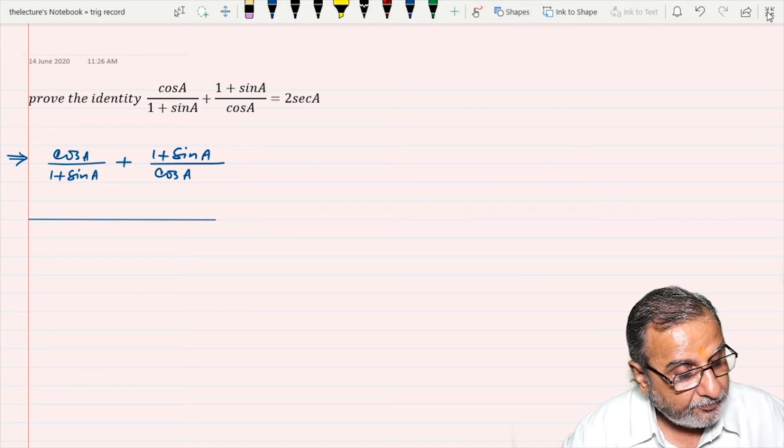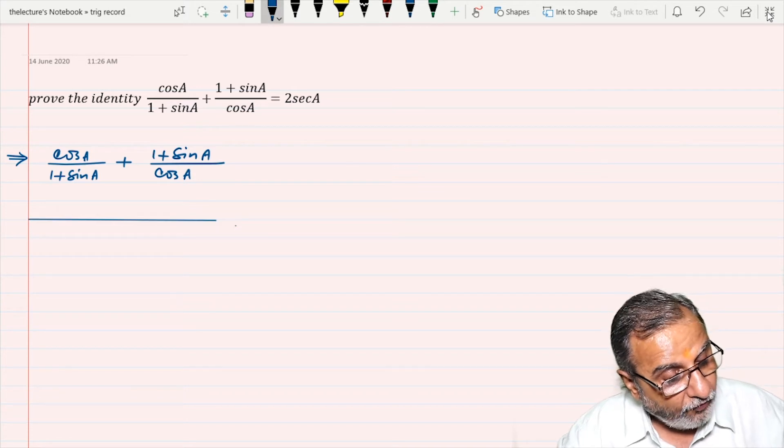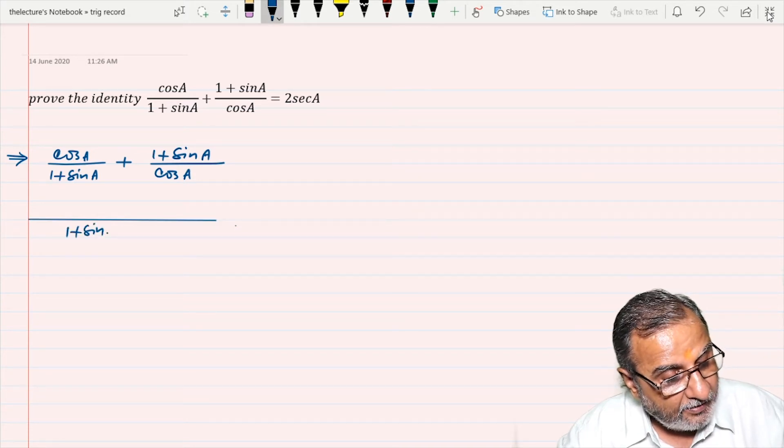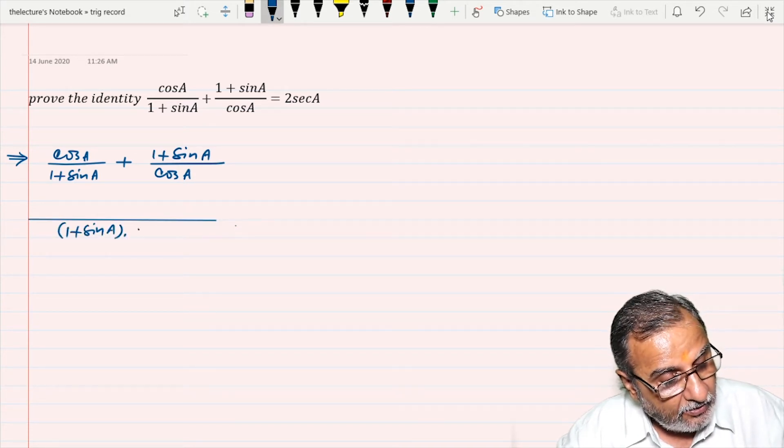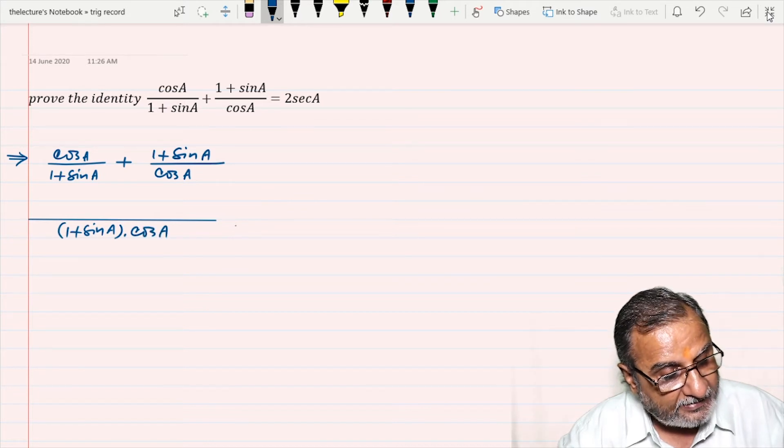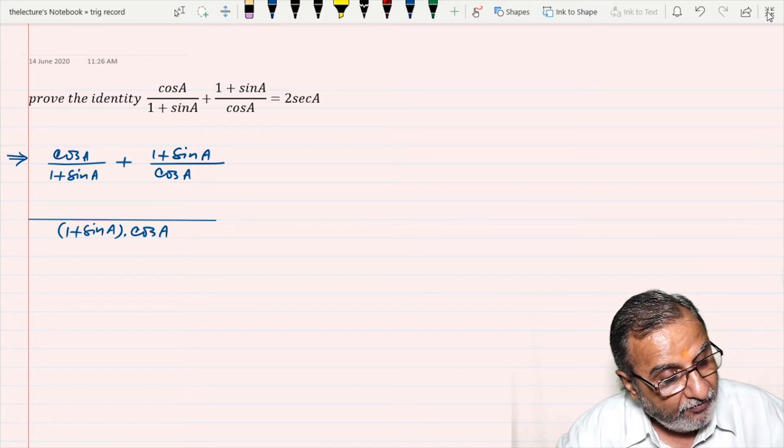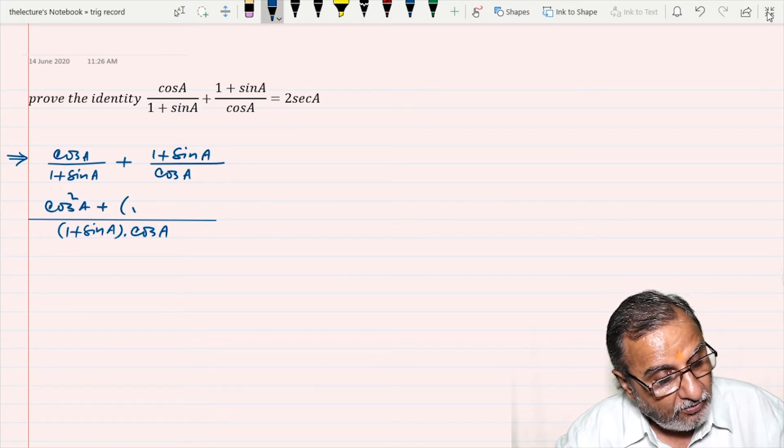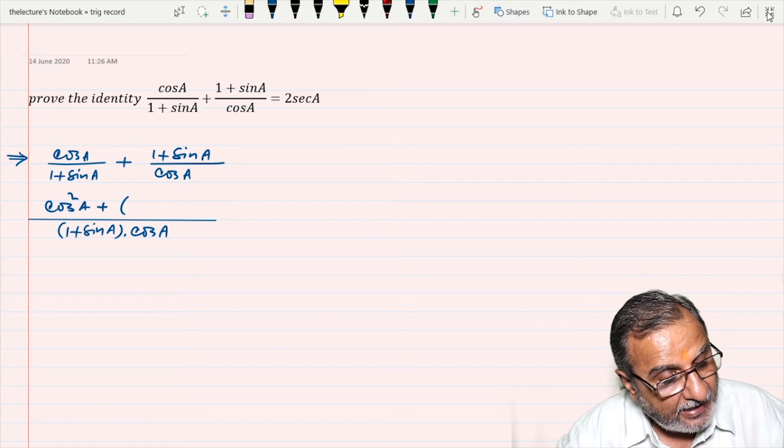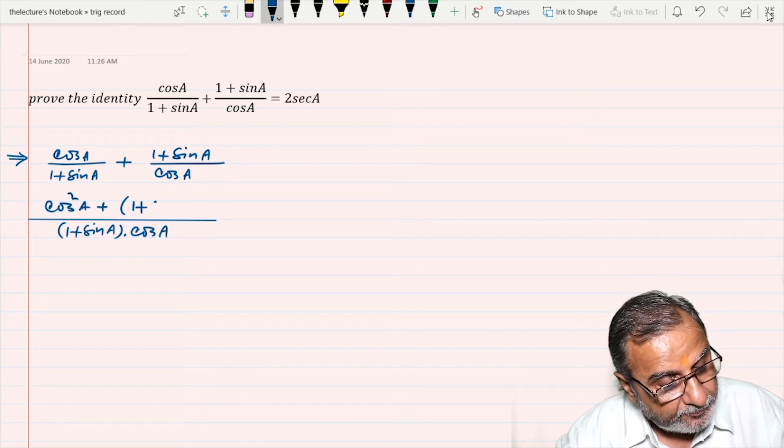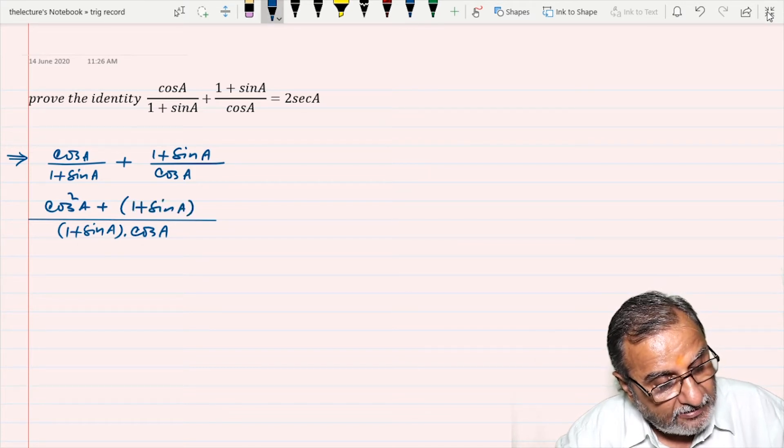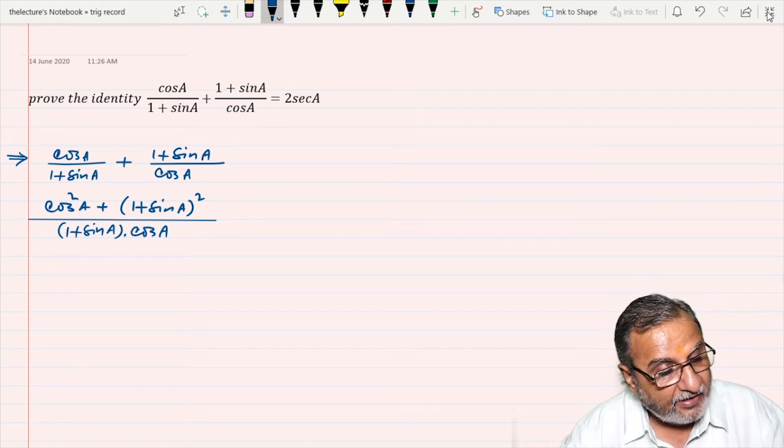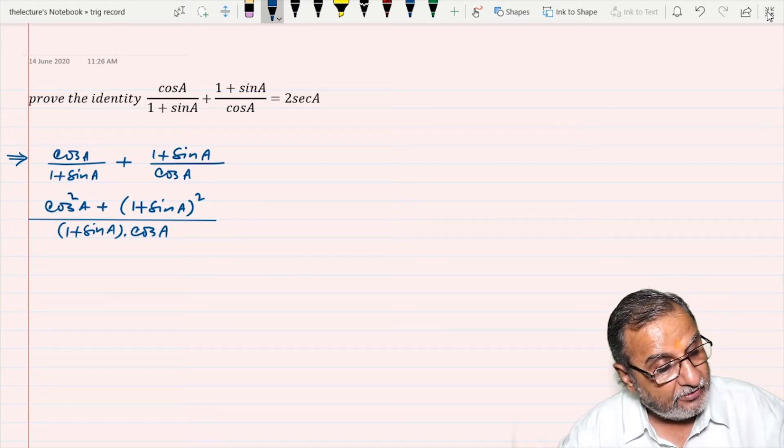I will write here (1 + sin A) · cos A as the LCM. So I will write here cos² A plus (1 + sin A)². Very simple, just taking LCM and getting the fraction complete.